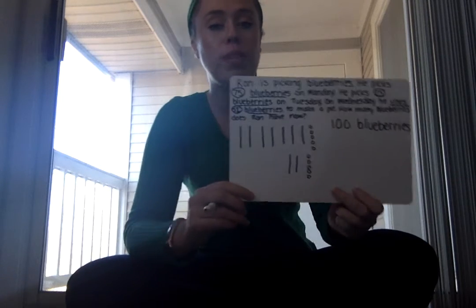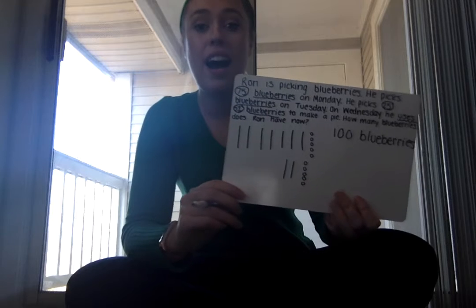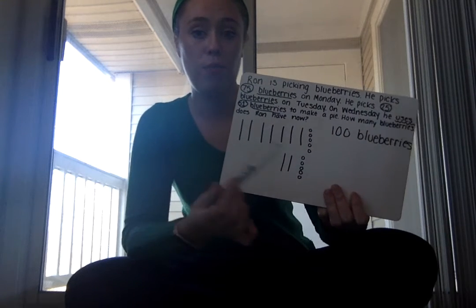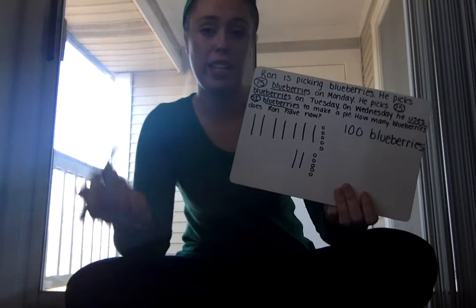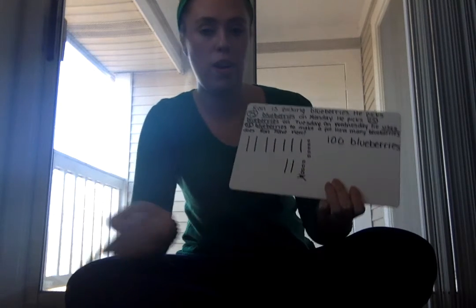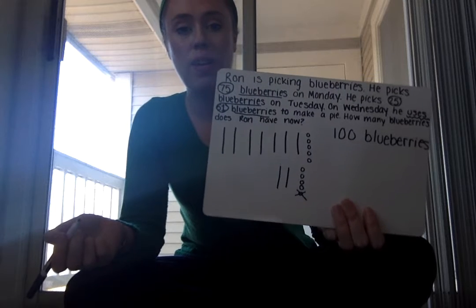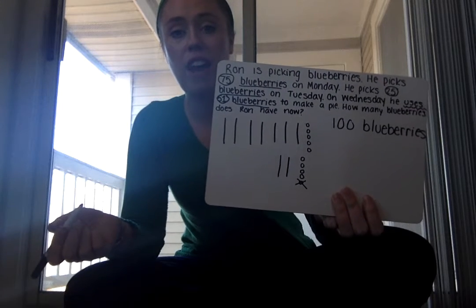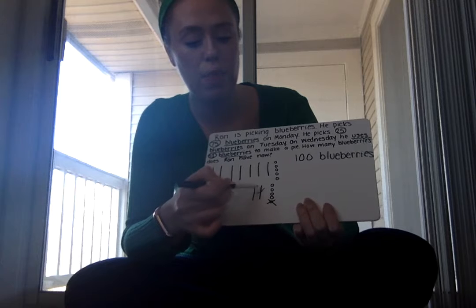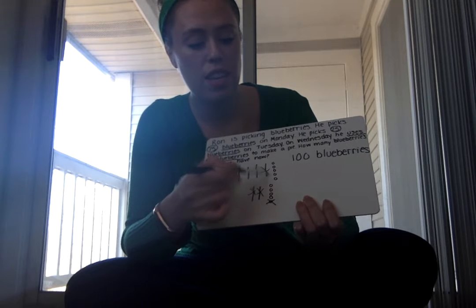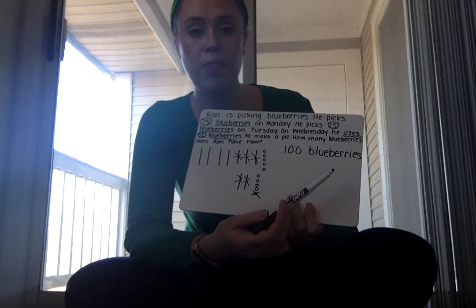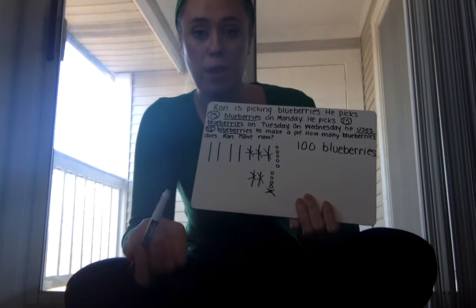Continuing with the base-10 pieces, I am going to cross out to subtract. I have 100 and I need to get rid of 51. I'll start with my ones and cross out one one. Now I need to cross out 50 — five groups of ten. I'll cross out five of them: one, two, three, four, five. So I had 100 blueberries then got rid of 51.